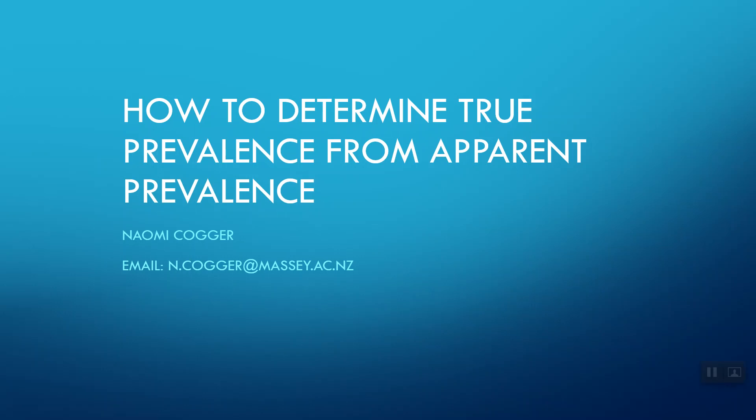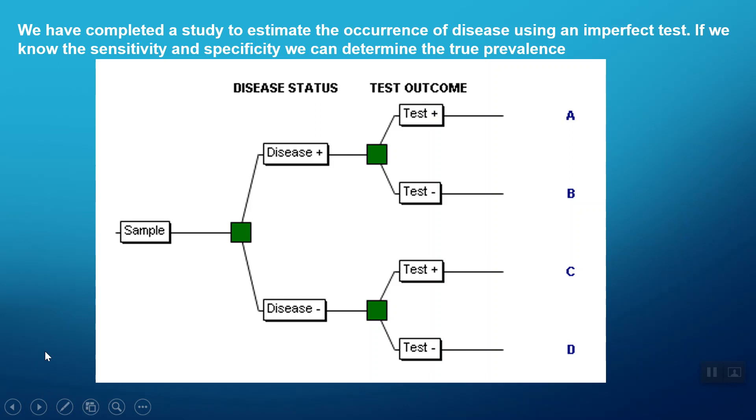Hi, we're going to talk about how to determine the true prevalence from an apparent prevalence using the concept of event trees. If we've completed a study to estimate the occurrence of a disease using an imperfect test, we can determine the true prevalence if we know the sensitivity and specificity.